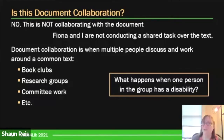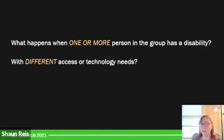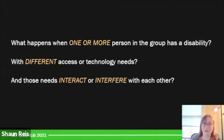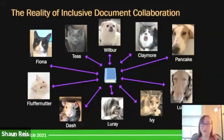The actual question you should ask is: what happens when one or more persons in the group has a disability? What happens when they have different access or technology needs? What do those different needs do when they interact or interfere with each other? When we're talking about inclusive, accessible document collaboration, we might have all these different people — cats, dog, a rat — all working around a common text, and there could be all sorts of interactions involved.